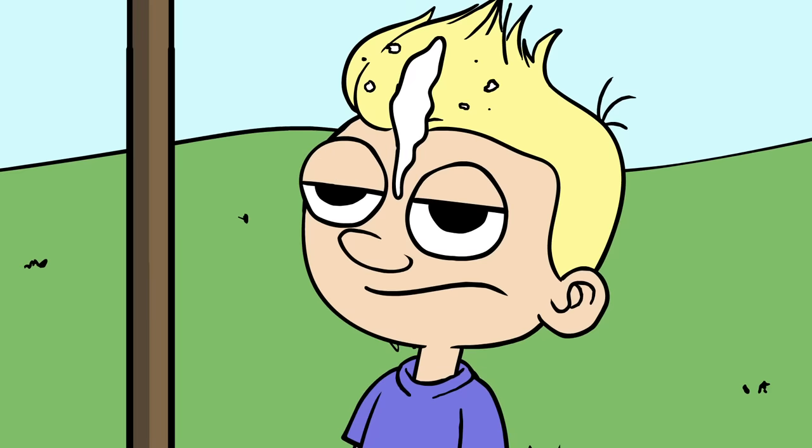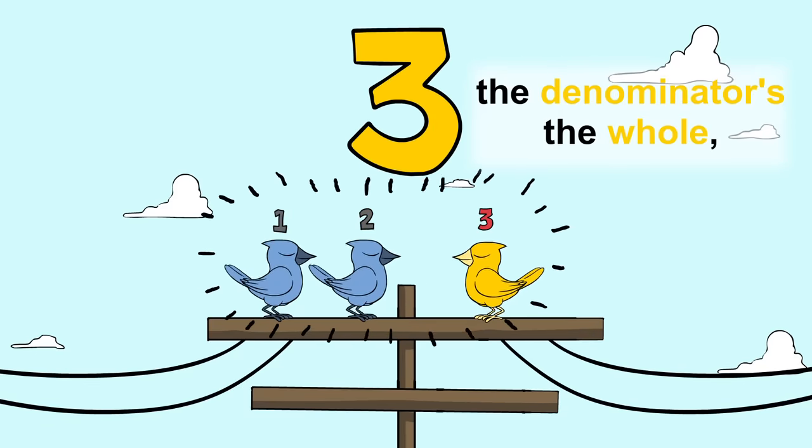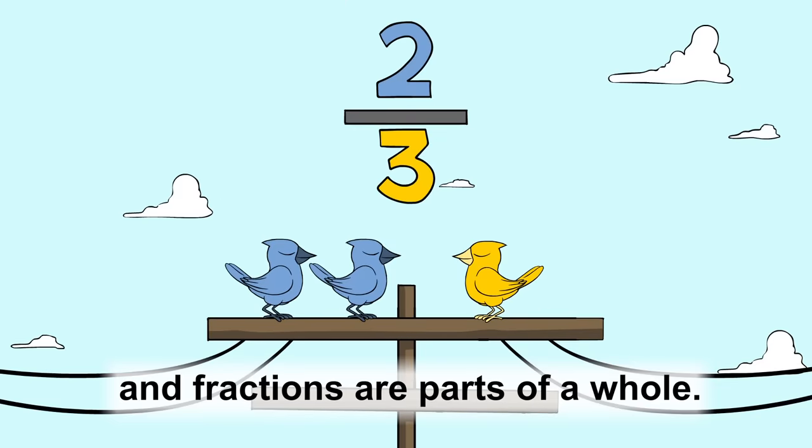Bird poo. The numerator's the part. The denominator's the whole. The fractions are parts available.